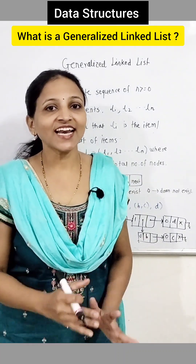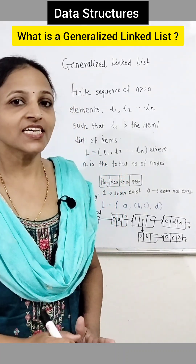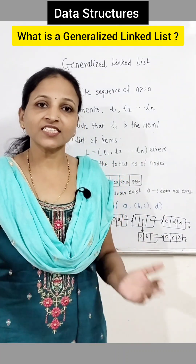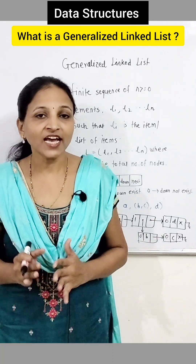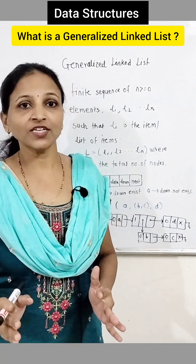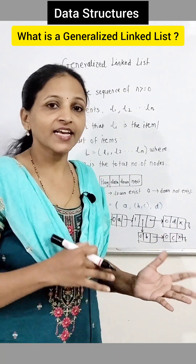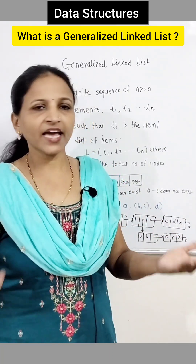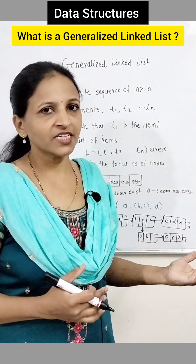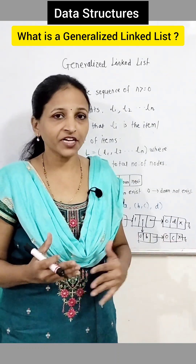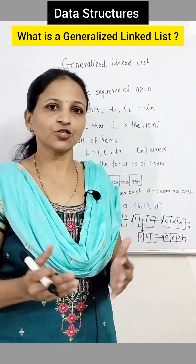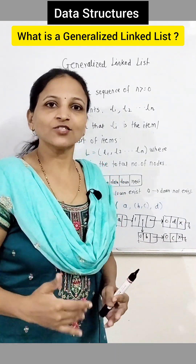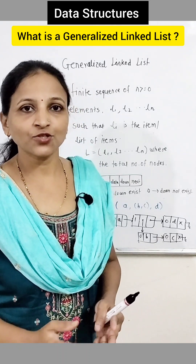Hello students, what is generalized linked list? You know the linked list data structure — it is nothing but a collection of nodes and each node is having data and next part in it. That data may be any character, may be any integer value, or it may be a collection of different data elements. That next will hold the address of the next node.